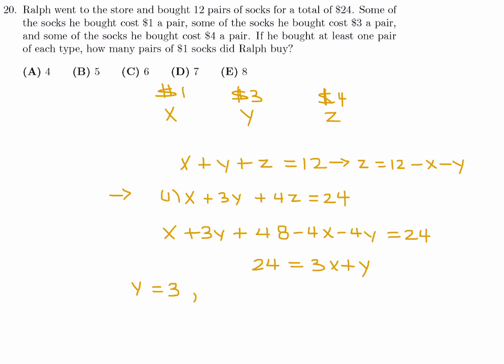X will be 21 divided by 3, which is 7. And then let's see what Z ends up being. Z will be 2. That'll work. And they wanted me to find how many pairs of $1 socks. And that's represented by the X. So that's just 7. So number 20, the answer is D.